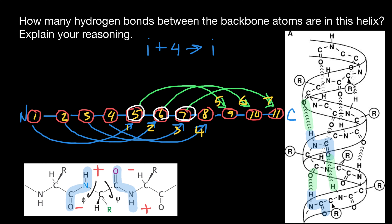A common mistake is to count the first four amino acids as having one hydrogen bond each, the last four as having one hydrogen bond each, and the middle three as having double hydrogen bonds — giving a total of 14. But we know the actual number is seven, because that method counts hydrogen bonds twice.